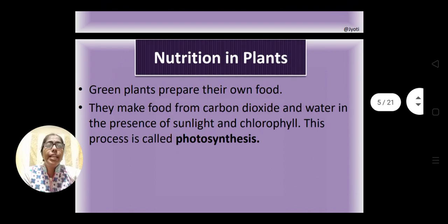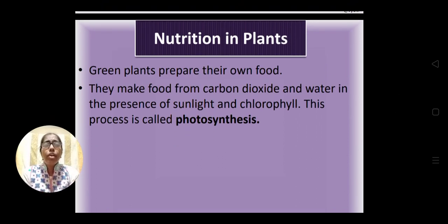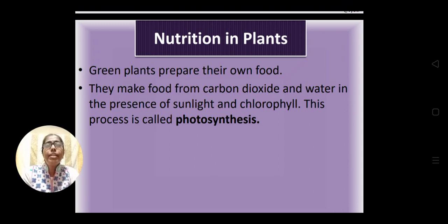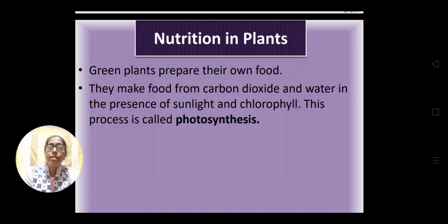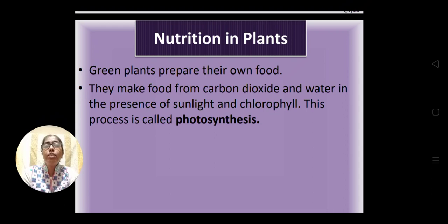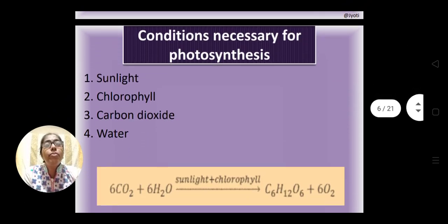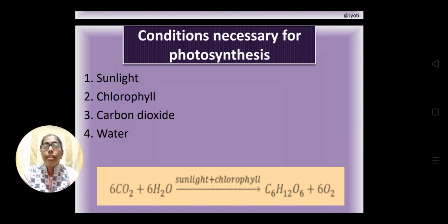When we talk about autotrophic mode of nutrition, it is the nutrition in green plants. Green plants prepare their food by the process of photosynthesis. Photosynthesis is the synthesis of food in the presence of light. Light alone is not sufficient — the other components required are carbon dioxide and water.